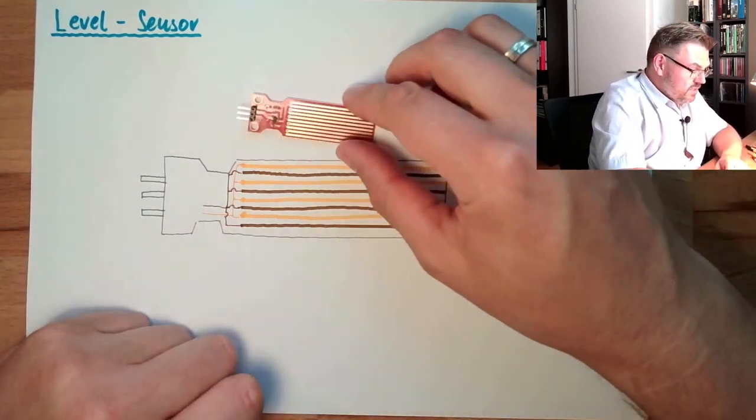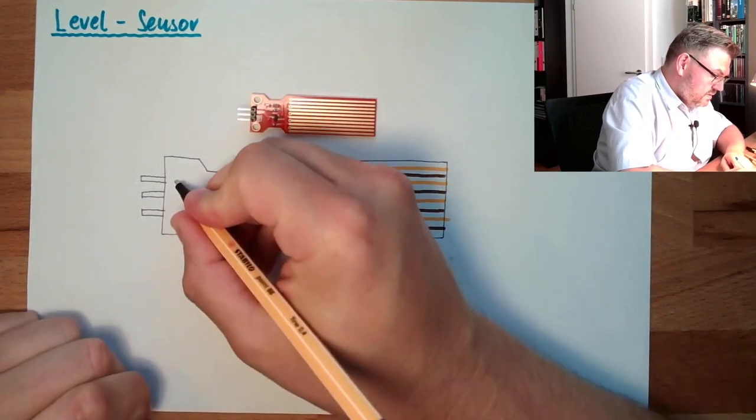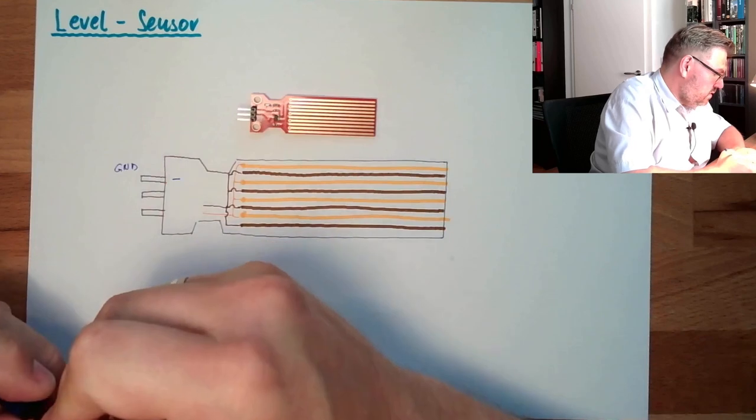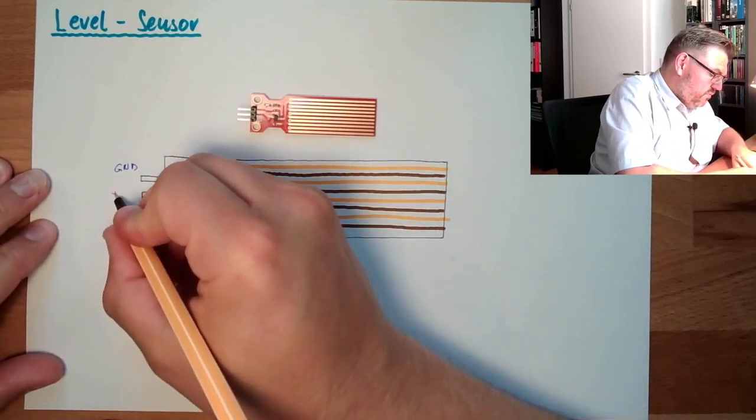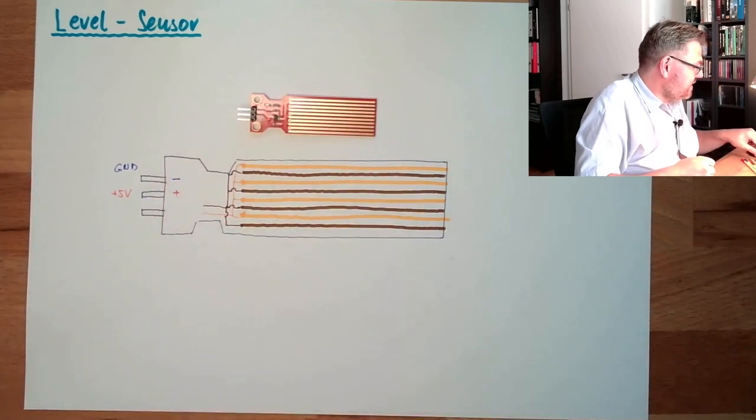The connections. Well, there's a minus, there's a plus. So we have here a minus, this is of course ground. Then we have here a plus, this is plus five volt. And then we have the signal S.